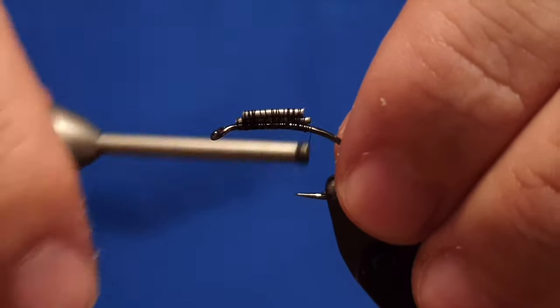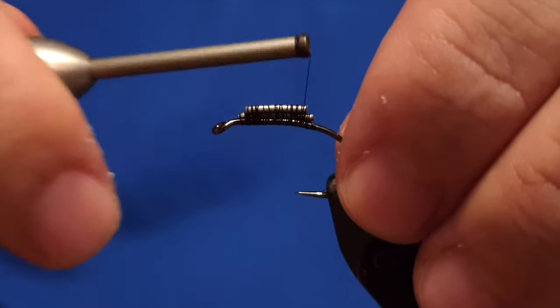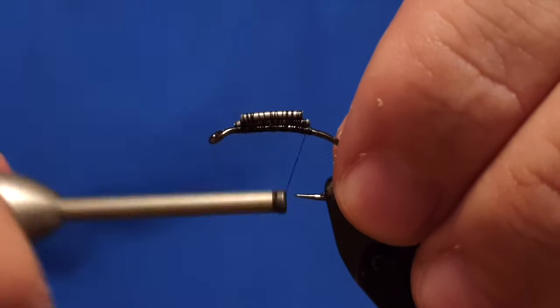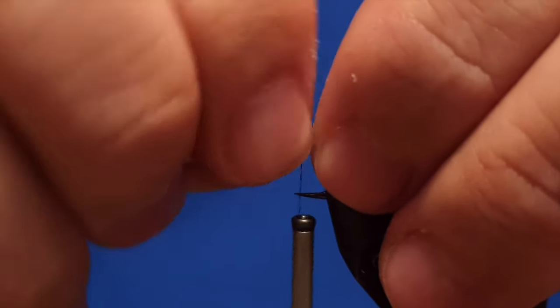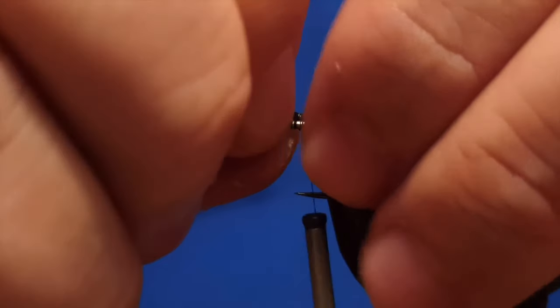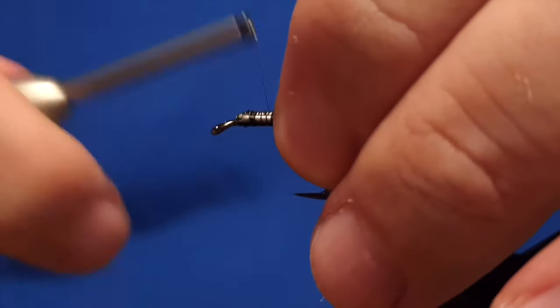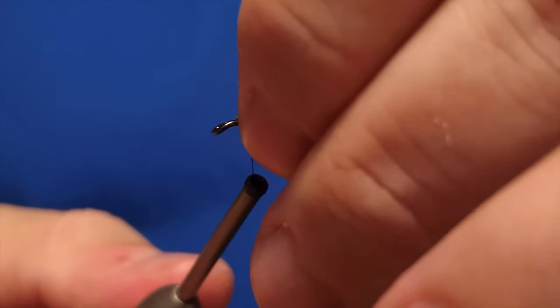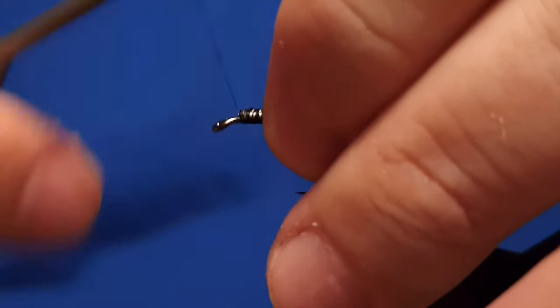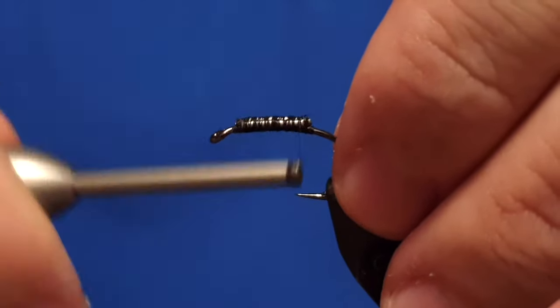I found out for the buoyancy of the fly and for the balance of it, it's better to keep those threads side-by-side on the top of the fly. That's what I found out—it's easier for you guys to tie it like that.